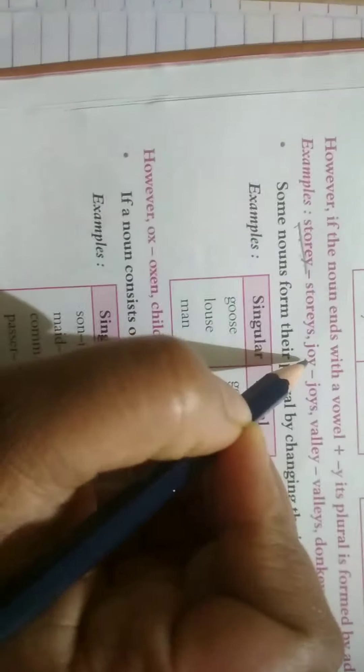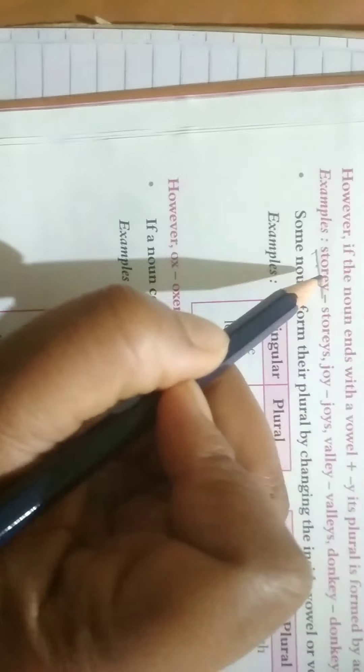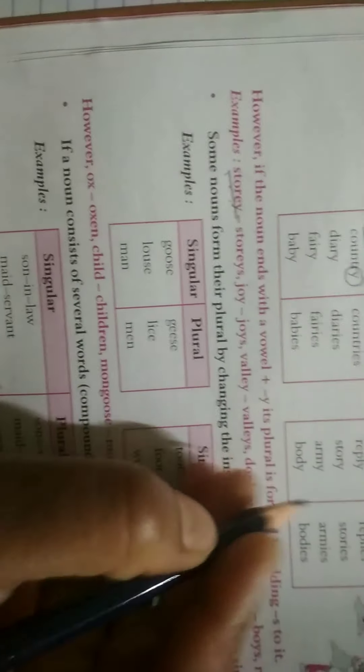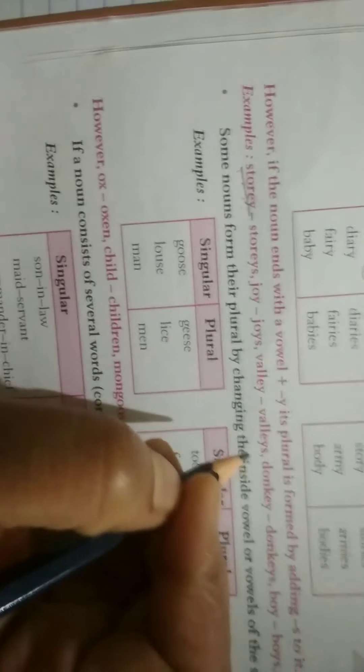Similarly, joy. Y is consonant and O is a vowel sound. So, when you find any these type of words, that means, if the noun ends with a vowel plus Y, its plural is formed by adding S. So, it's ending with consonant Y, but just after the consonant, it has a vowel sound. So, if you find these type of words, then how the plural form will be made?